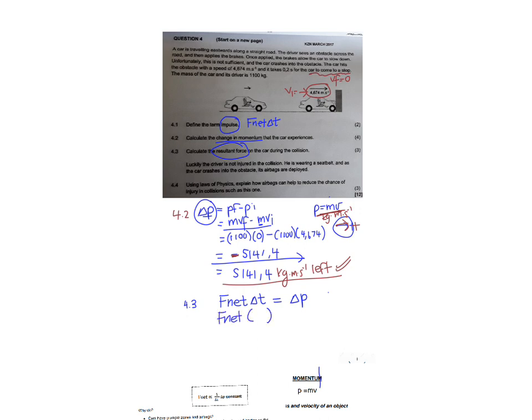So we are looking for F net. The collision time was given in the question. Let's go back to the question. It was given as 0.2 seconds. The change in momentum we had calculated in the previous question as negative 5141.4. It is very important to substitute that as a negative. And now when we put this into our calculator.